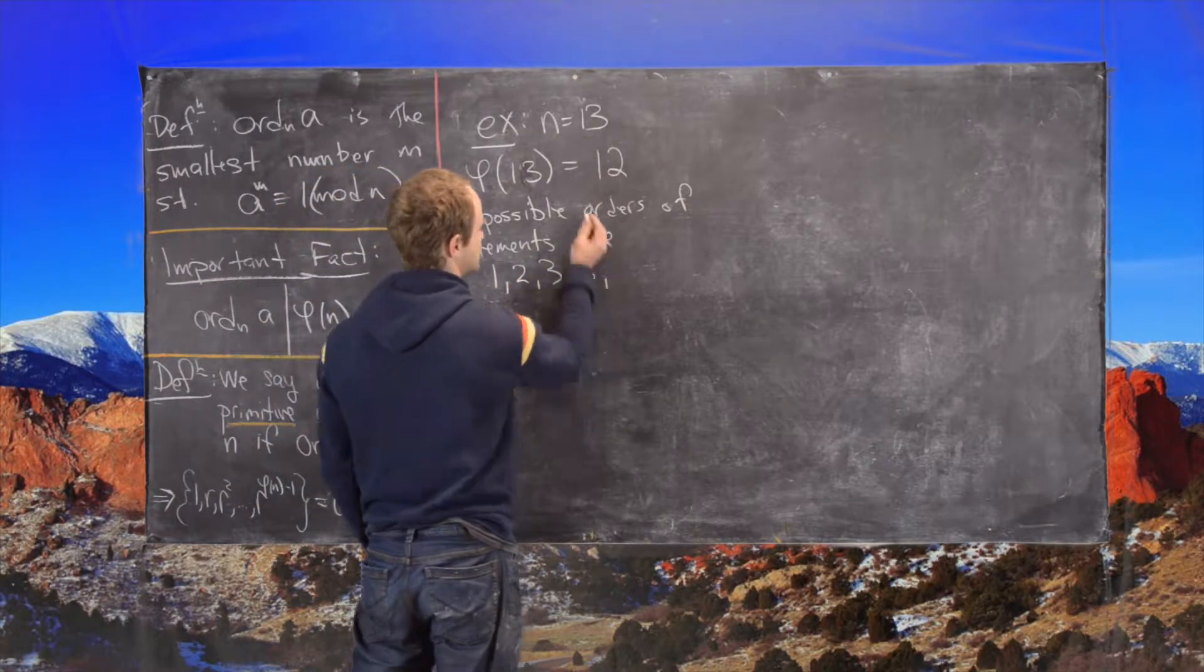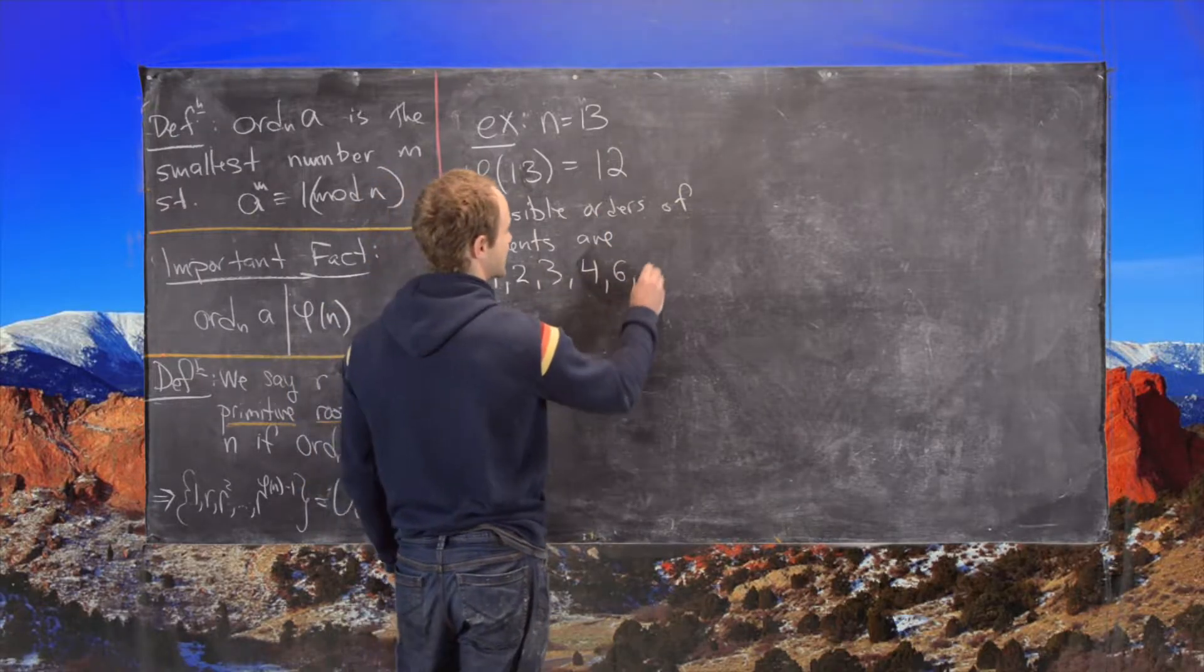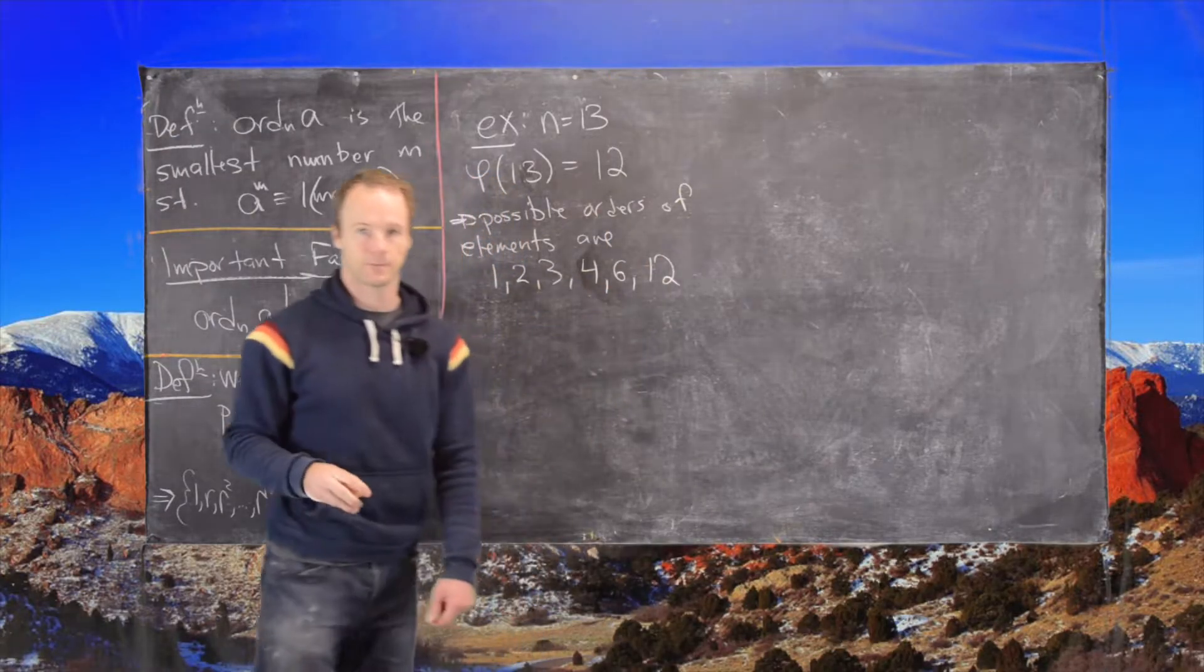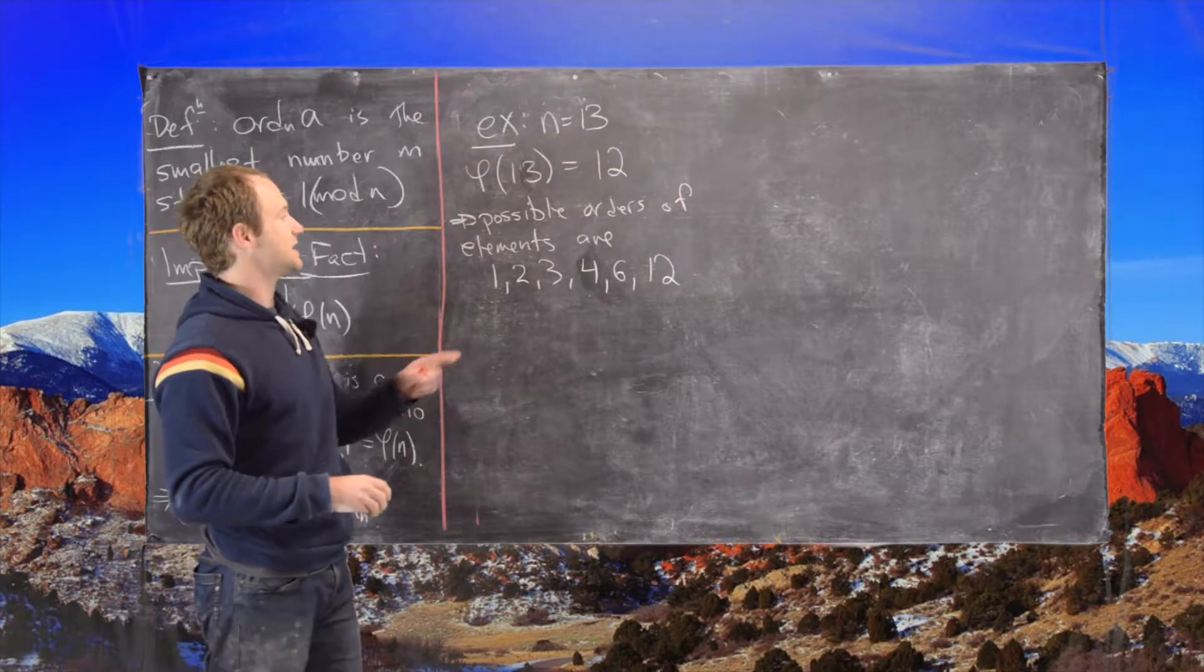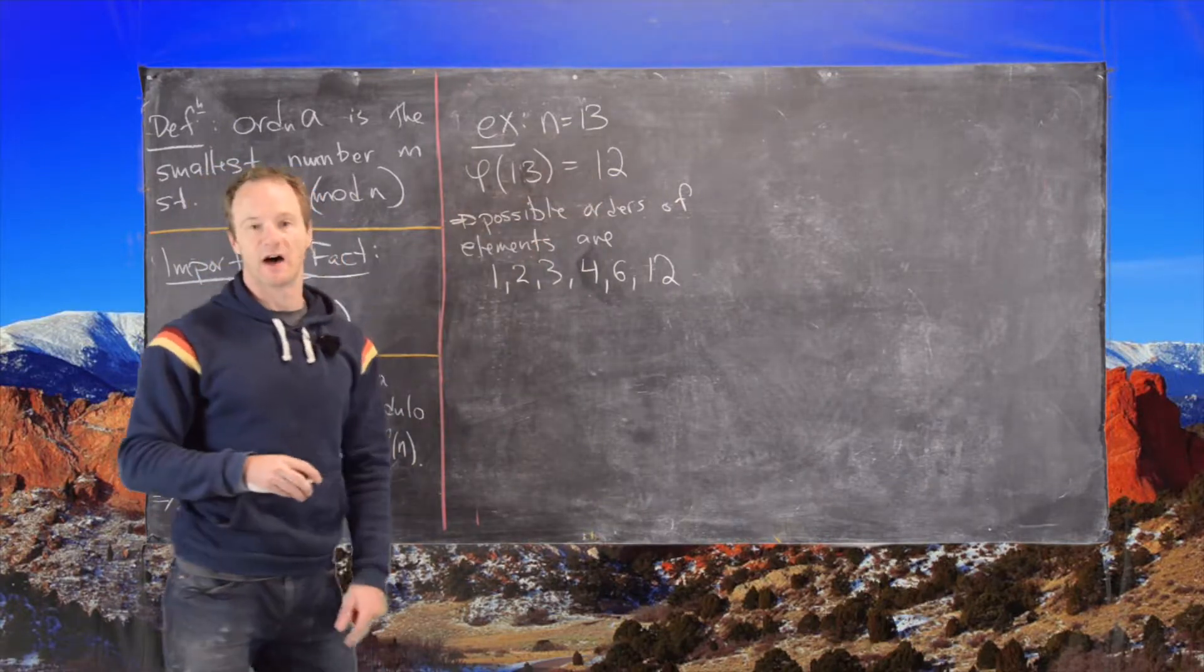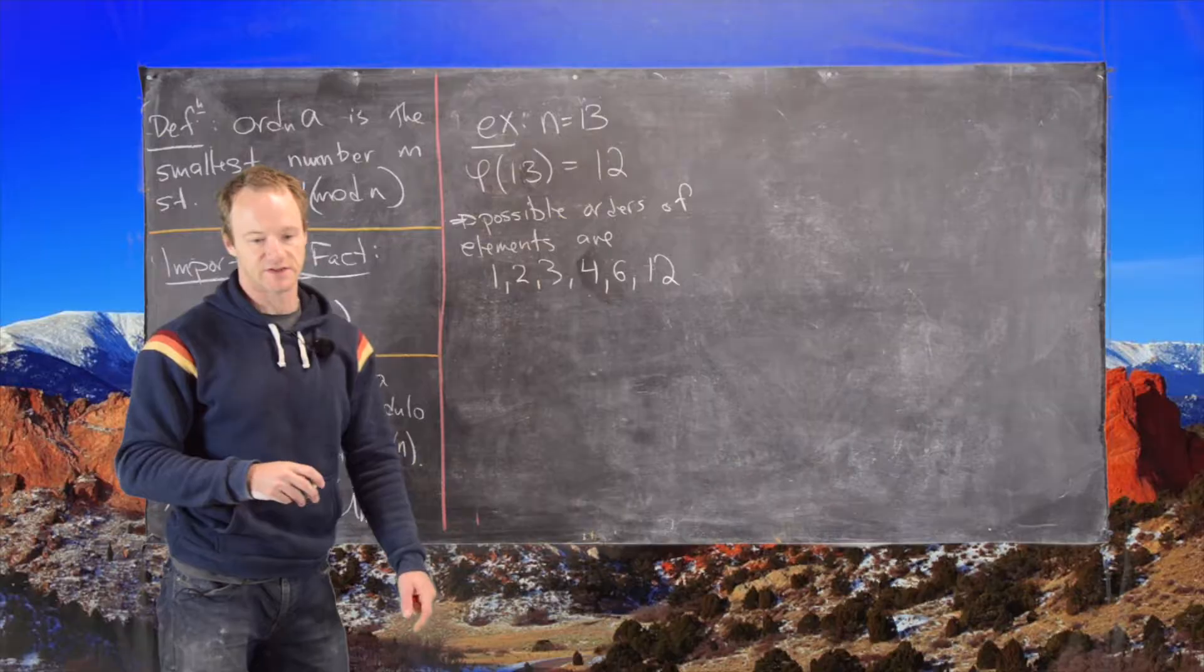And so that tells us that the possible orders of elements are 1, 2, 3, 4, 6, and 12. And that's because we know the possible orders must divide 12 and these are all the divisors of 12.